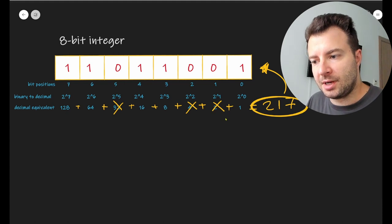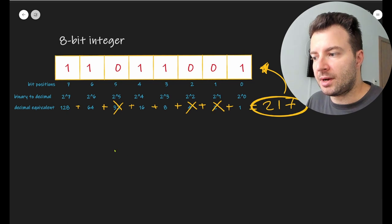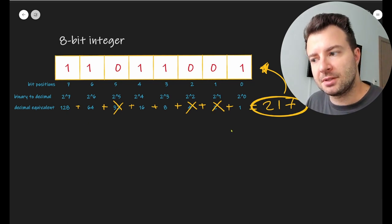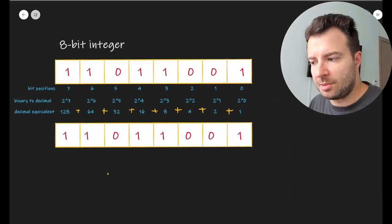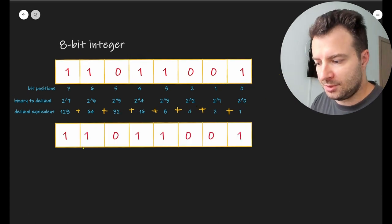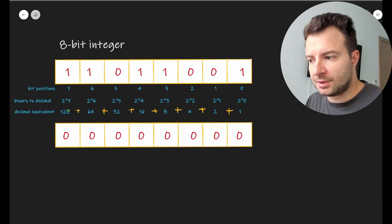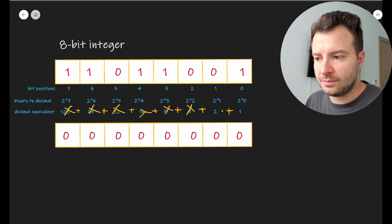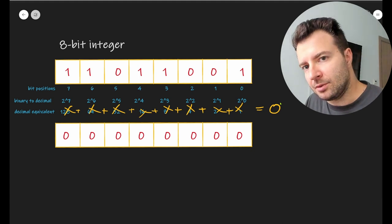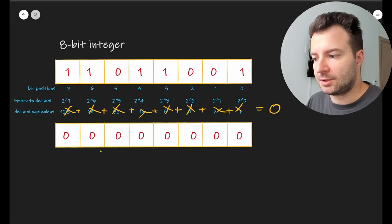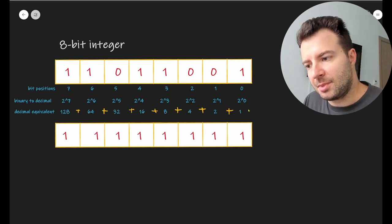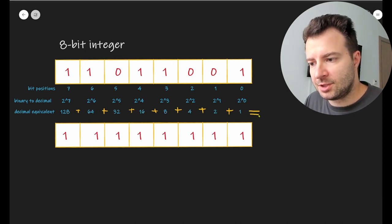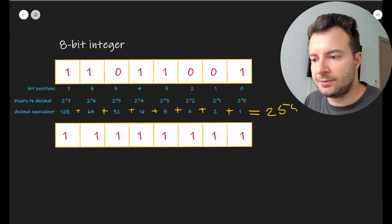Now we can deduce the minimum and maximum values representable in this 8-bit integer. For the minimum, we set all bits to zero, and the decimal equivalent is zero. For the maximum, we set all bits to one. Adding all the decimal equivalents — 128 + 64 + 32 + 16 + 8 + 4 + 2 + 1 — we end up with 255. So our byte can store any value between 0 and 255.